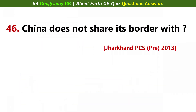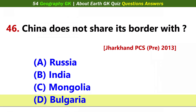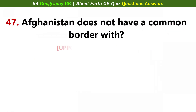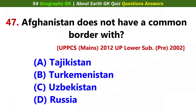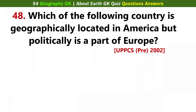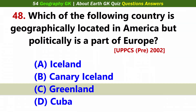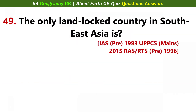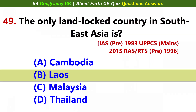China does not share its border with the Caspian Sea? Answer D: Bulgaria. Afghanistan does not have a common border with the Caspian Sea? Answer D: Russia. Which of the following countries is geographically located in America but politically is a part of Europe? Answer C: Greenland. The only landlocked country in South Asia is? Answer D: Laos.